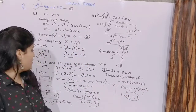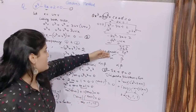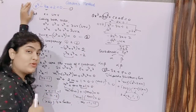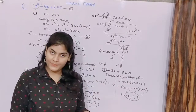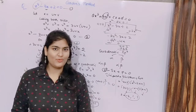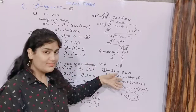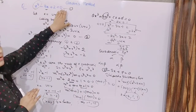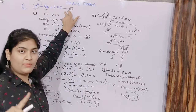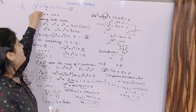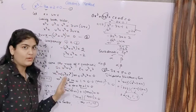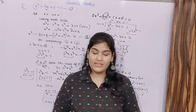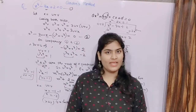To recap: if given a cubic equation, first remove the term with power 2, then put x = u+v, cube both sides, form a quadratic equation in u³ and v³, solve it, and then use long division to get all the roots. If the question specifically says to find roots by Cardano's method, you must follow this procedure. If you liked this video, don't forget to like, share, and subscribe. See you in the next video, take care, bye.